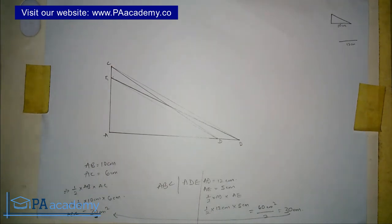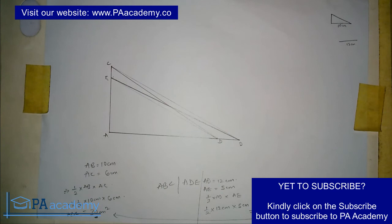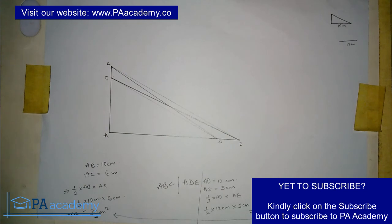This is how you draw a triangle of equal area to a given triangle but on a different base. You can also check the link in the description to the first video I did where I didn't include this calculation to verify the drawing. If you have any questions, comments, or video requests, leave them in the comment section below. Please subscribe to PA Academy, give this video a thumbs up if you found it helpful, check our playlist on technical drawing for more videos, and visit our website paacademy.co. See you in another video — thank you very much.